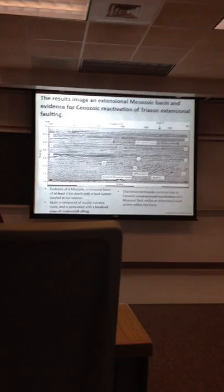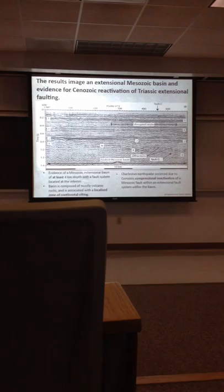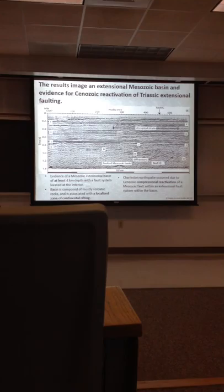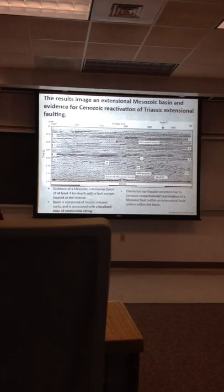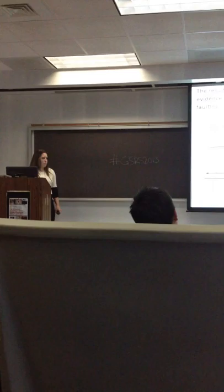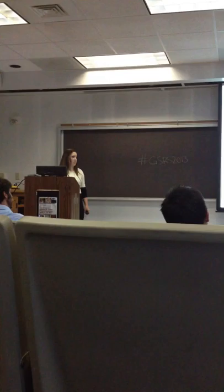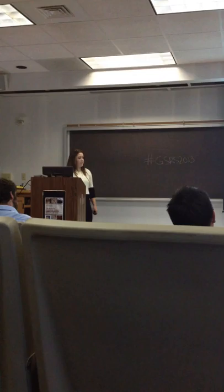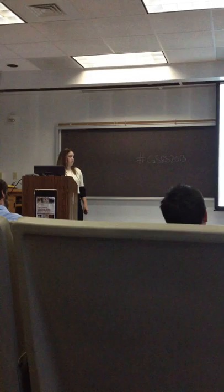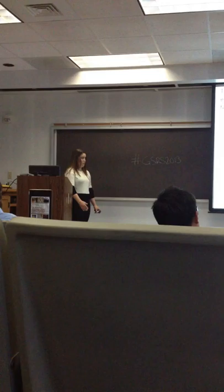Their results included several reflection profiles. I'm going to talk about the VT3 profile, which shows the results most clearly in terms of faults. The profiles imaged a Mesozoic extensional basin of at least four kilometers depth with an extensional fault system at its interior. The depth is also known from borehole data — the boreholes go to about four kilometers, and most believe the basin actually extends deeper. The basin is composed of mafic volcanic rocks shown by the magnetic anomaly maps, and is associated with a zone of localized continental rifting.